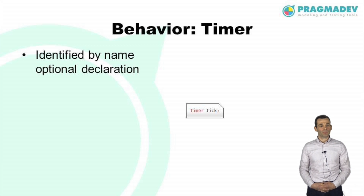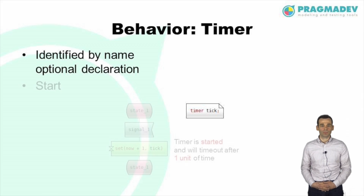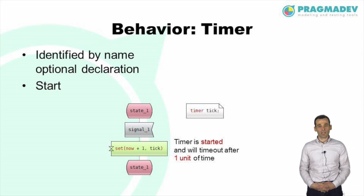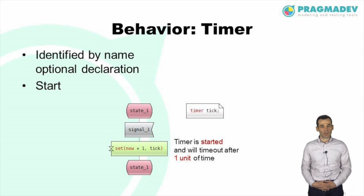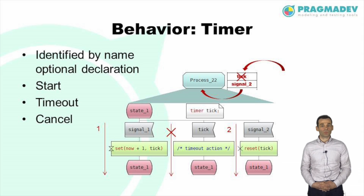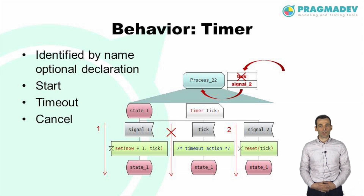Timers are identified by their name; their declaration is optional. The behavior in SDL is concerned with duration, that is, with the difference between timer values rather than the values themselves. That is why the unit of time in SDL is irrelevant. A timer is started with its expected timeout and the 'now' keyword can be used to get the current time. When a timer goes off, it becomes a message in the input queue and is treated in first in first out order. If the timer is cancelled while the corresponding message is already in the queue, the message will be removed from the queue. In this example, the transition triggered by signal 2 will cancel the timer tick, which will be removed from the queue and its associated transition will not be executed.